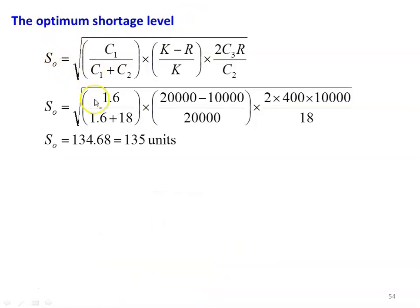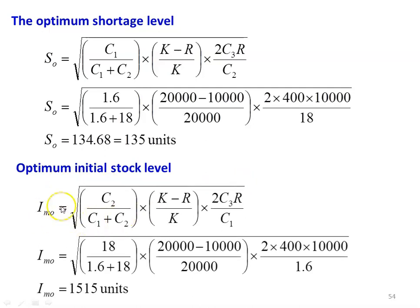Optimum shortage level SO = √[C1/(C1 + C2) × (K − R)/K × 2C3R/C2]. Substituting numerical values: √[1.6/(1.6 + 18) × (20,000 − 10,000)/20,000 × 2 × 400 × 10,000/18]. Calculating SO = 134.68, approximately 135 units. Optimum initial stock IMO = √[C2/(C1 + C2) × (K − R)/K × 2C3R/C1]. Substituting: √[18/(1.6 + 18) × (20,000 − 10,000)/20,000 × 2 × 400 × 10,000/1.6] = 1,515 units.